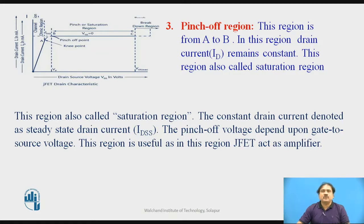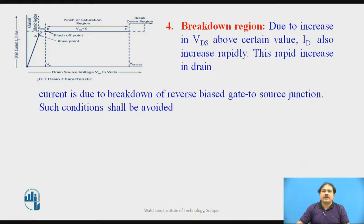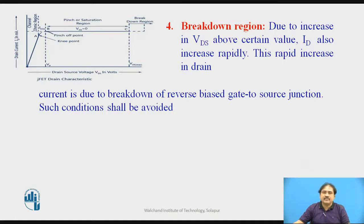In the pinch-off region, the channel width available for the flow of drain current has its minimum width, and that is why the device supplies a constant current. There is one more region which is unwanted and not good for the device. Above some voltage — the maximum voltage Vmax — the drain current increases drastically. This is because of the reverse bias voltage between the gate and source: at that potential, a breakdown of the P-N junction occurs. That is why it is called the breakdown region, and we must avoid this happening in the device.